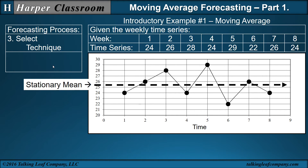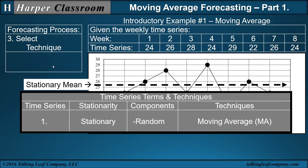Next is select your technique, and that's where the table comes in. When we have a stationary time series and a random component, the technique of preference is moving average.